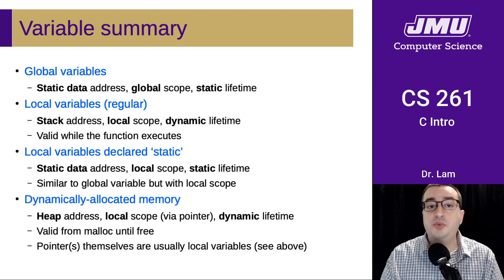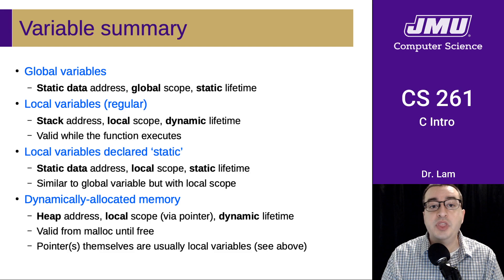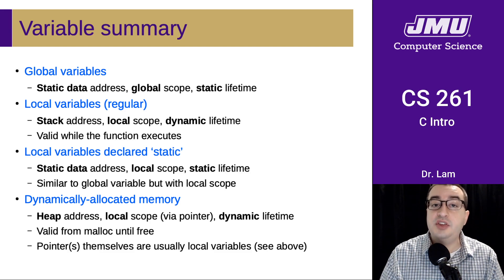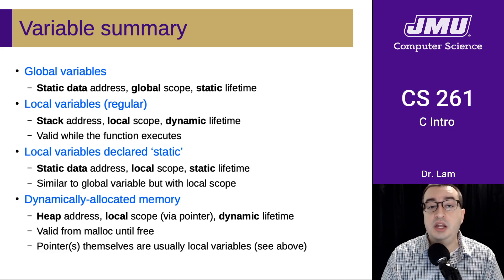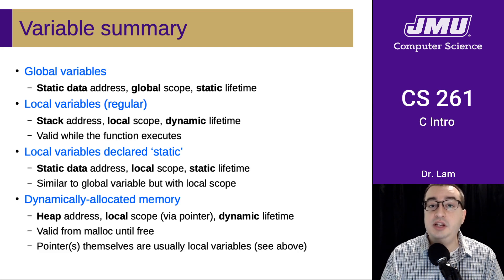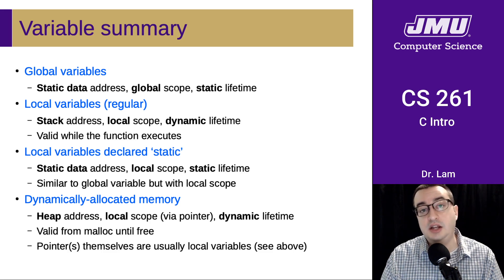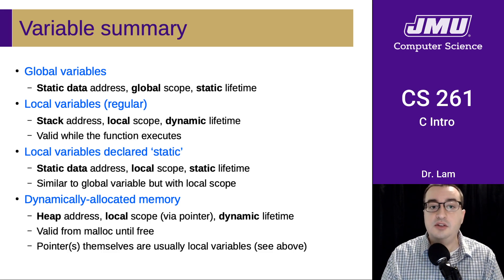In contrast to global variables, we have local variables, which you're used to from Java. These are located on the stack, so they have an address on the stack. They are only in scope inside of the function definition. And they have a dynamic lifetime, meaning they are allocated when the function begins executing and deallocated when the function finishes executing.